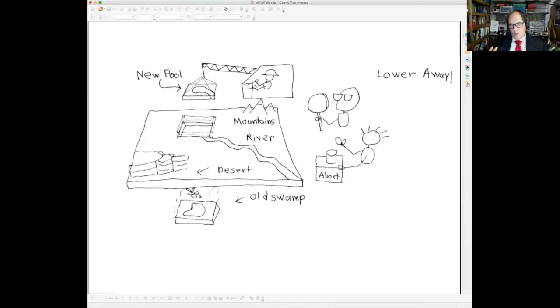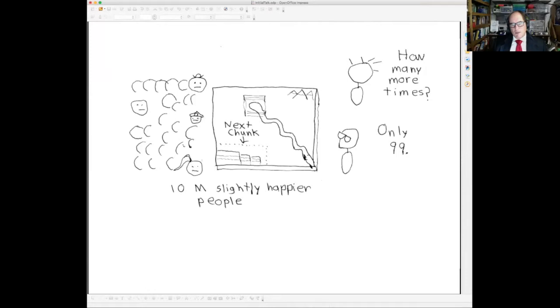If something went wrong, she would be able to instantly roll the code back. So Rob said, lower away, the old swamp dropped out and a new pool was put in place. Well, so this was good because it decreased the number of bugs. And now you had 10 million slightly happier people, which was very, very good.